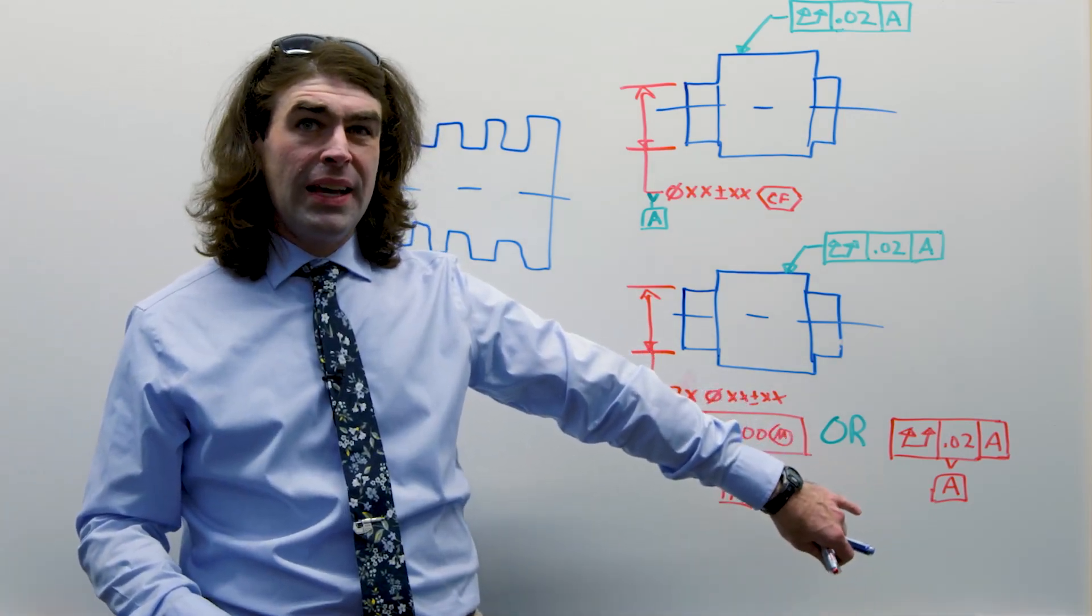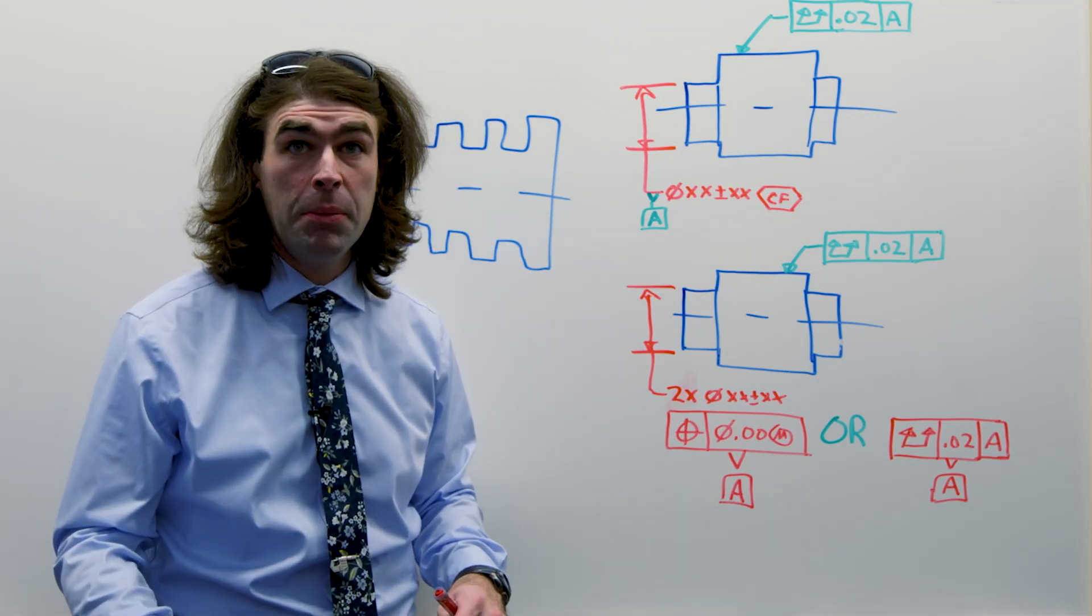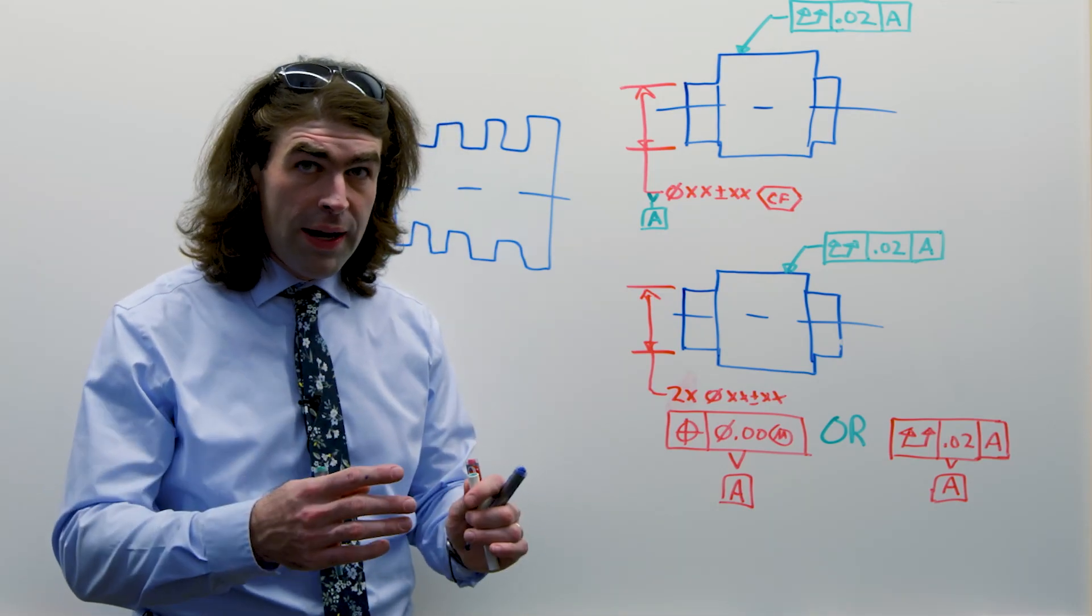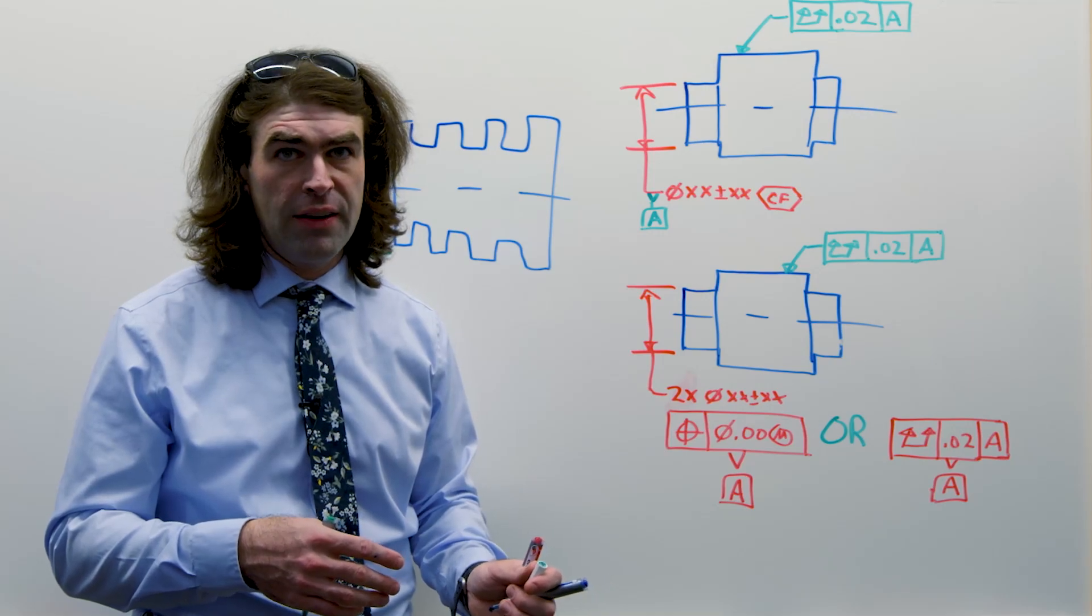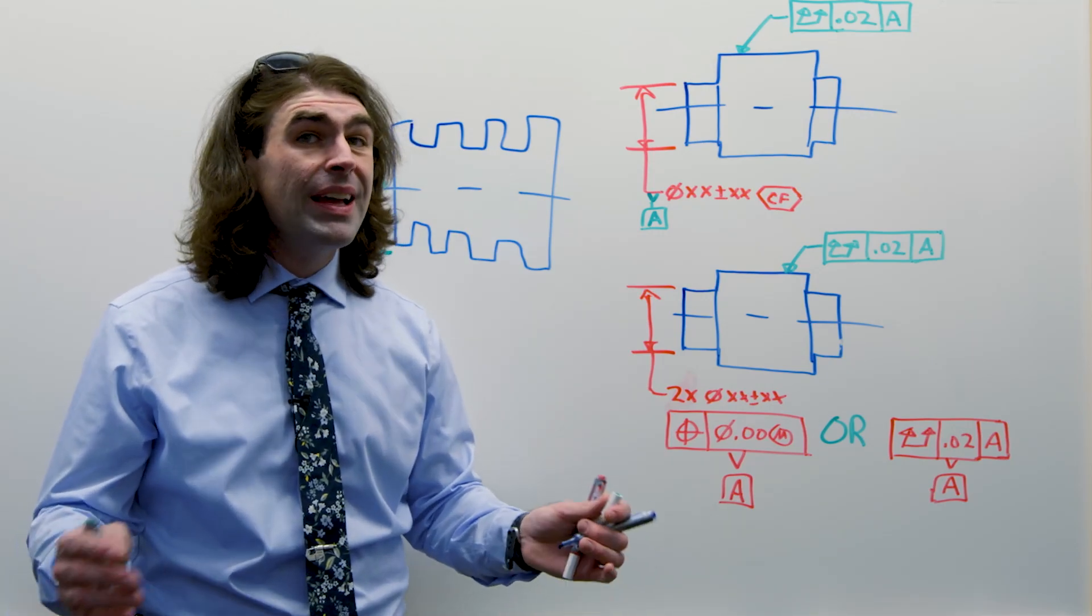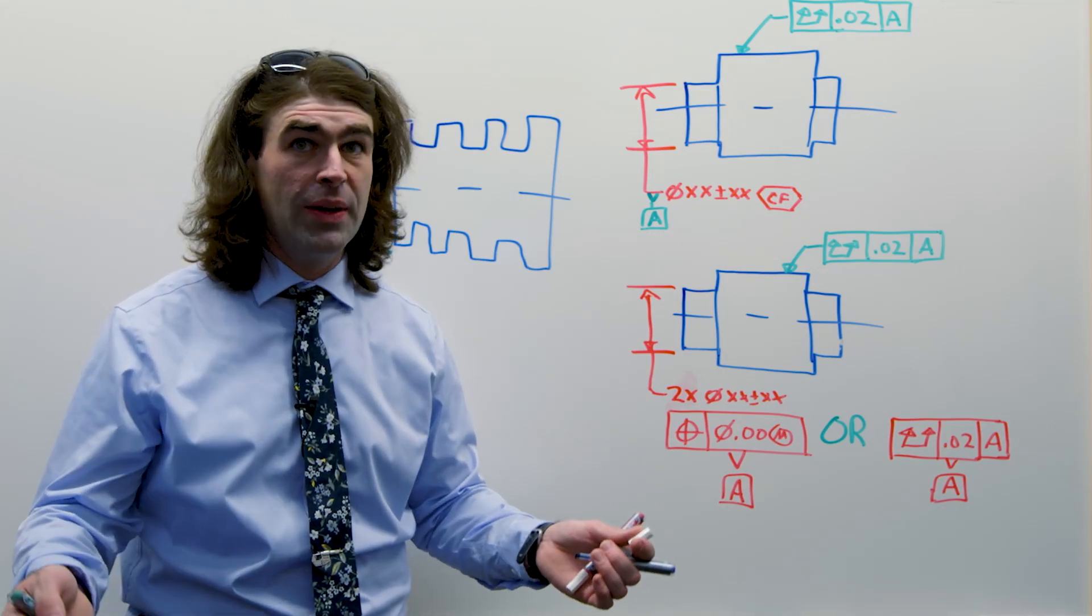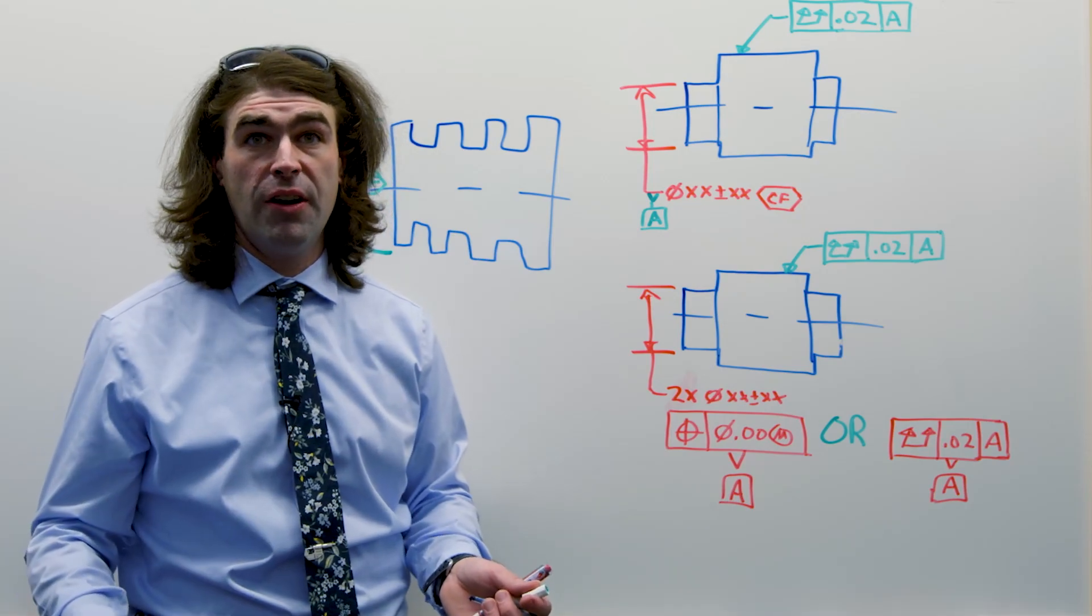We could do the same thing with runout. Now, it might be going out on a limb here. Runout can reference itself. So it's in Y14.5 where you've got a common datum and it's referencing one of the datums to itself. It's not an unheard of thing.